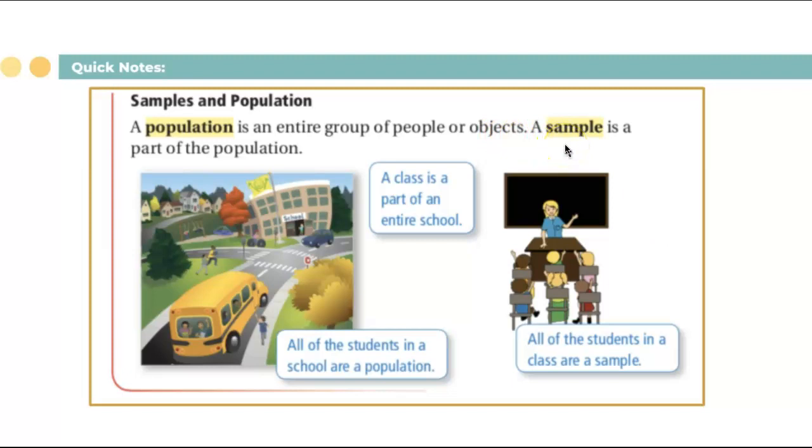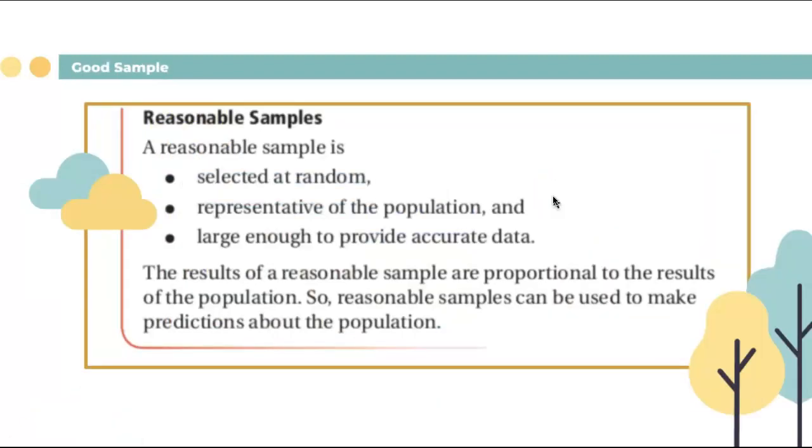There are some reasonable samples that we need to look out for. Selected at random, so samples should be selected, for example, every third or fourth or every eighth student who comes in, or every fifth person who comes in. It depends. It should be random. Representative of population, so if there are sixth, seventh, eighth graders, there should be a representation for every category, for every group. Large enough to provide accurate data. So the larger it is, if possible, the better the sample it will be.